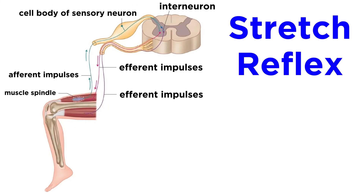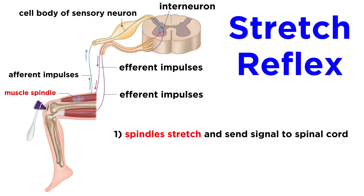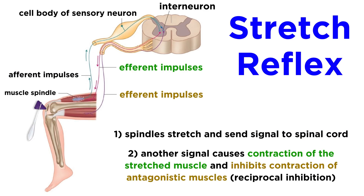First let's examine the stretch reflex. This is the classic reflex involved when the doctor taps on your knee with a mallet and your leg extends. What happens is that the tap causes spindles of the thigh muscle to stretch, which sends a signal up the afferent neurons to the spinal cord. This sends another signal down the motor neurons that causes the thigh muscle to contract, and your leg extends.